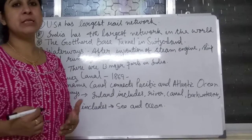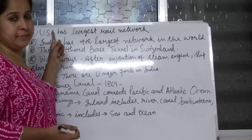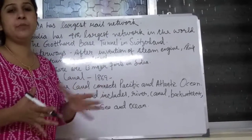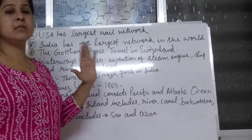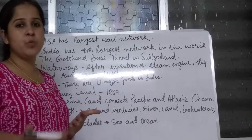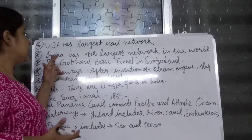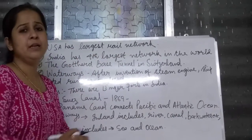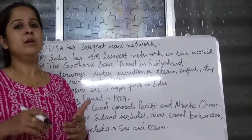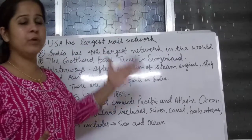Now let's talk about the railway system and different kinds of rail networks. The United States of America, USA, has the largest rail network. It means the rail network throughout that country is one of the largest in the world, and most of the transport and travelling of people is carried by the railway network. India has the fourth largest rail network in the world.